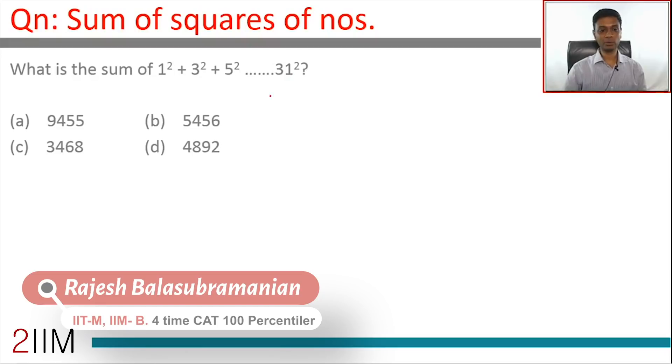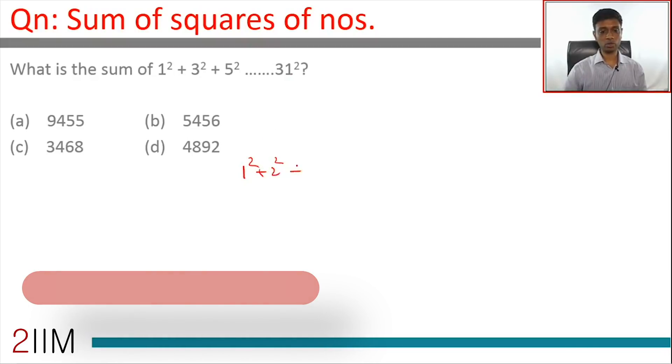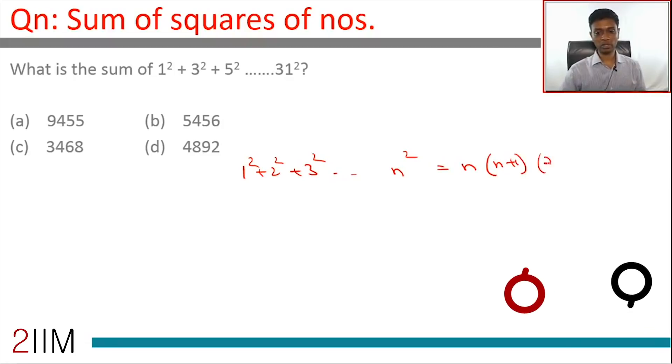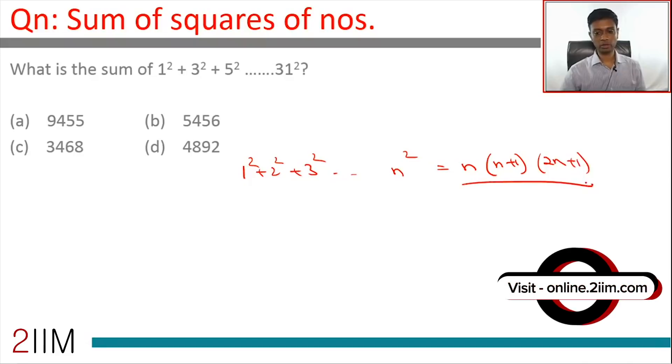To start with, if you have 1² + 2² + 3² all the way to n², this sum has a very simple formula: n(n+1)(2n+1)/6. This is not what you've been asked. We've been asked for 1² + 3² + 5² all the way to 31².